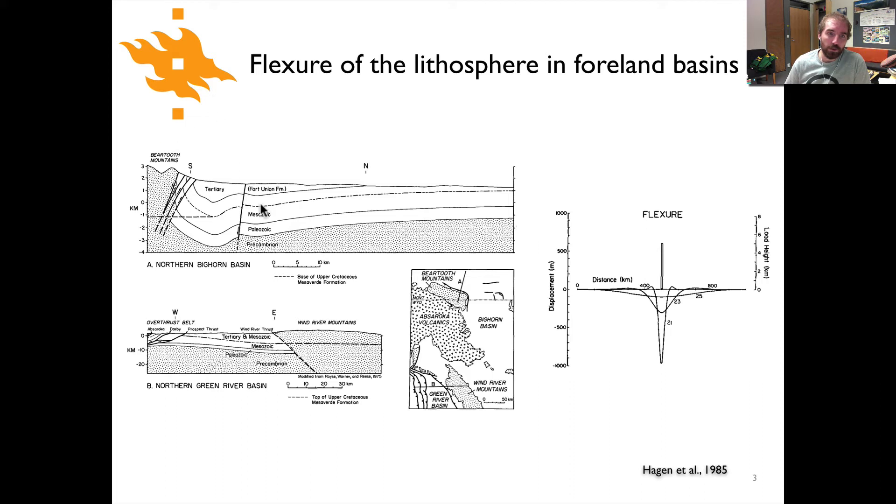Those are the Beartooth Mountains in the top section and the Wind River Mountains in the lower section, shown on the map as A and B for the two cross sections. The load of the uplifting mountain range pushes down on the lithosphere, and that flexure results in a downwarping of the footwall lithosphere. That's what forms the accommodation space for the deposition of sediment proximal to the mountain.